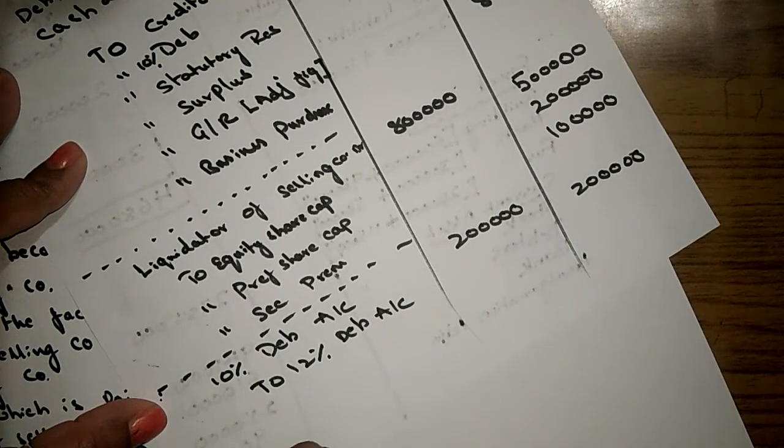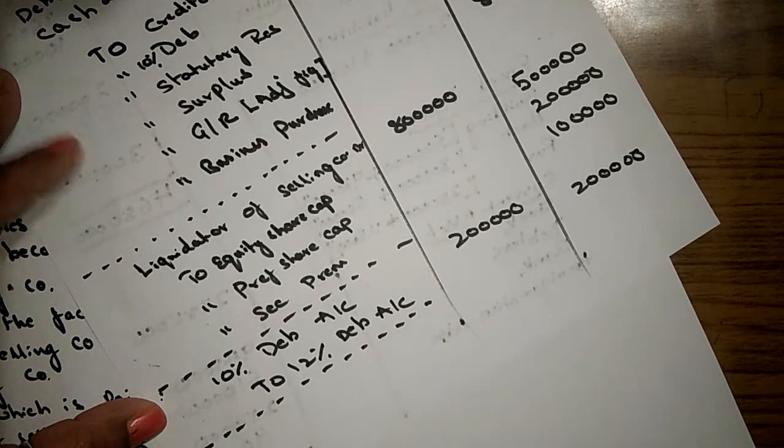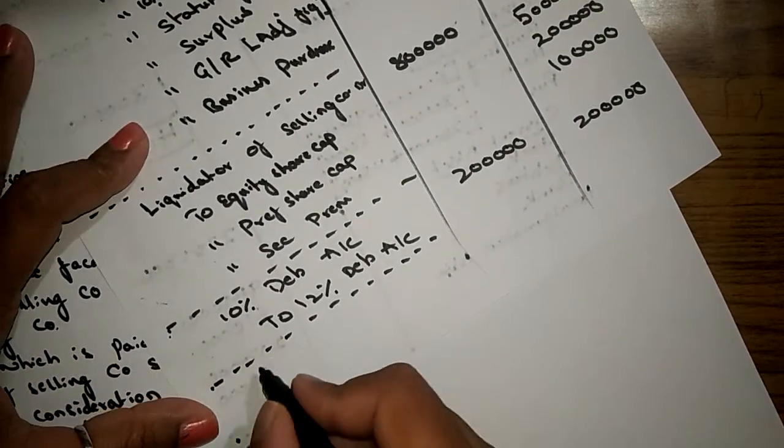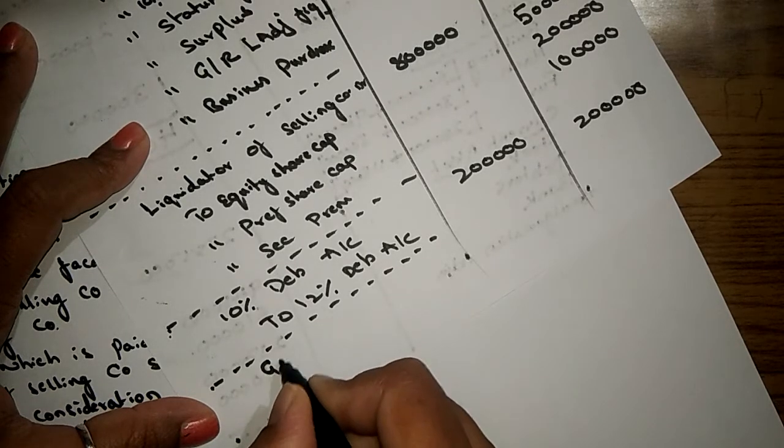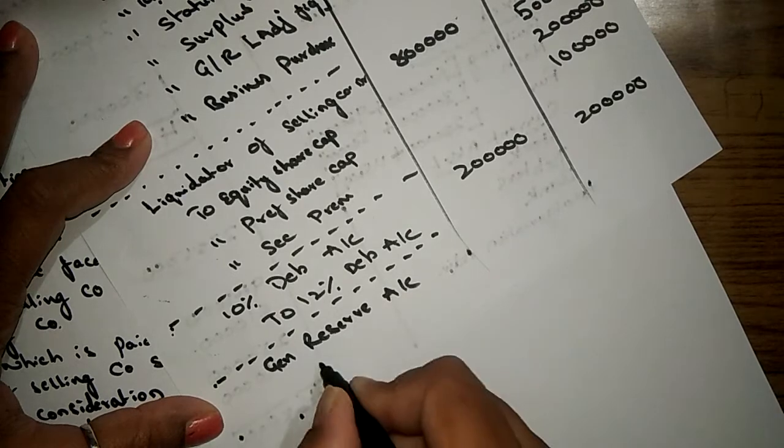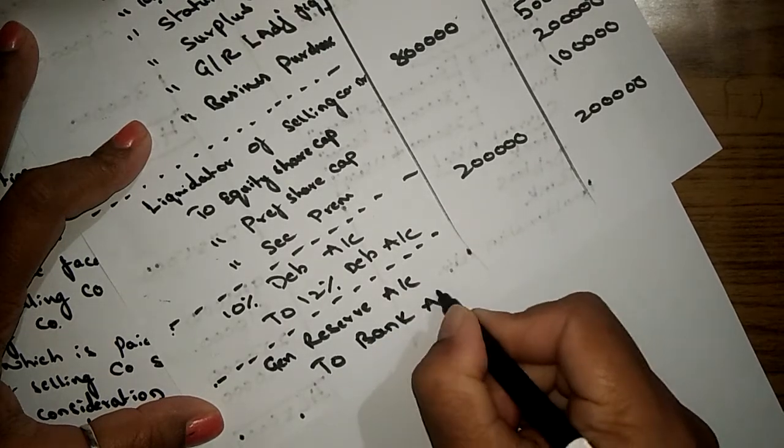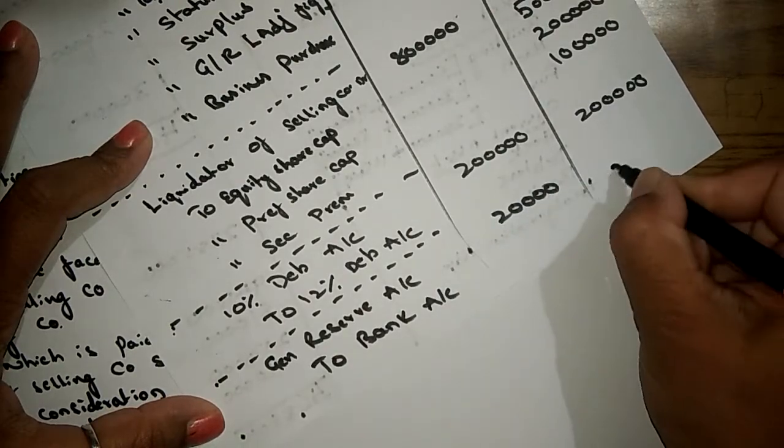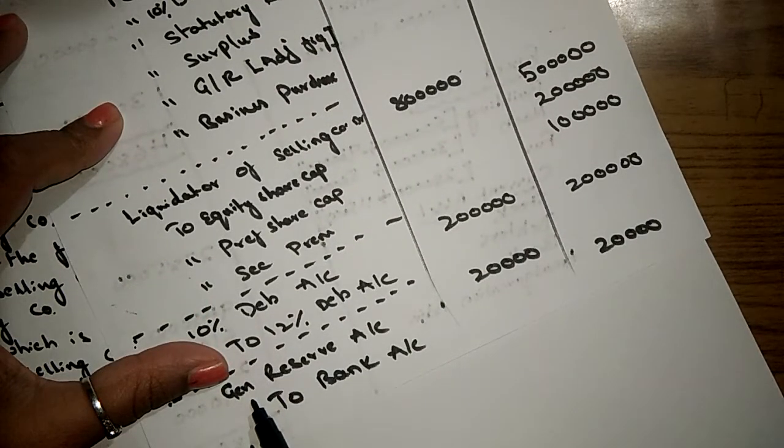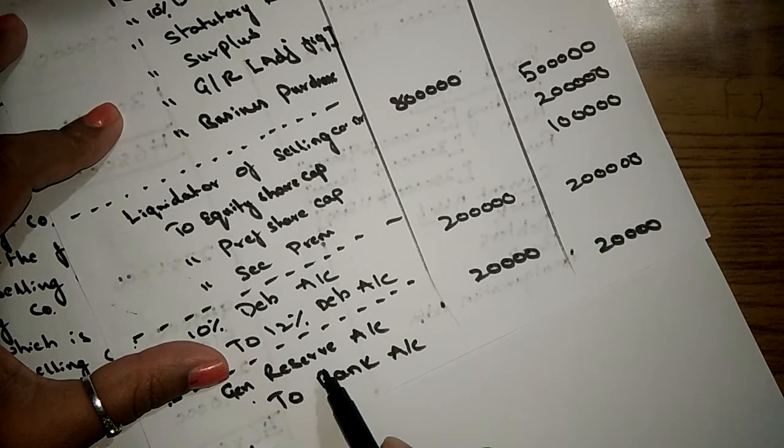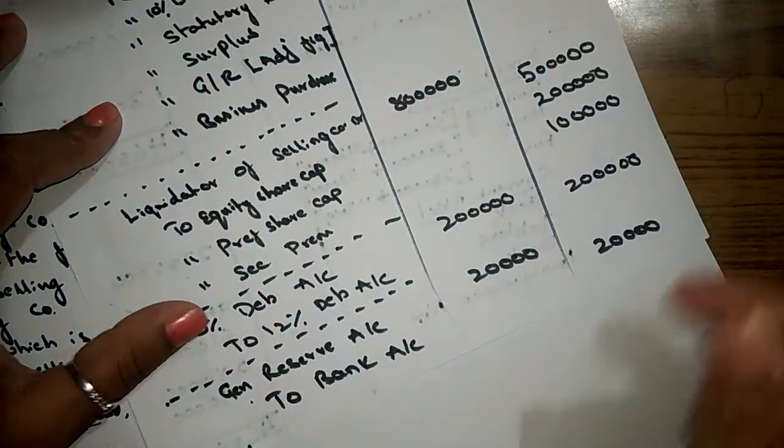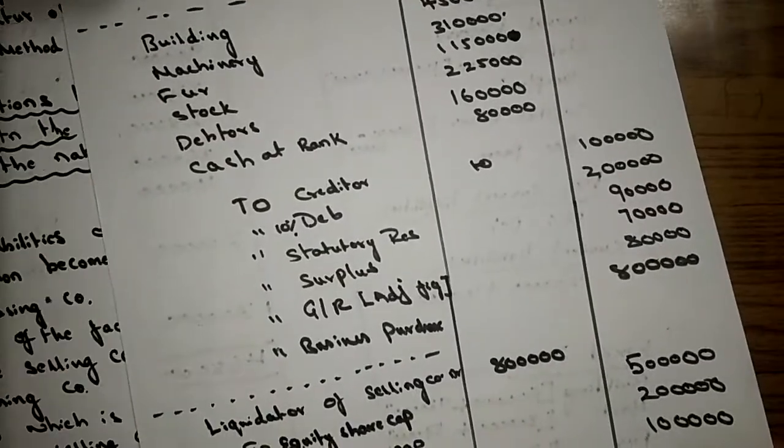The last entry would be payment of liquidation expenses. General reserve account to bank account 20,000. Under purchase method we adjusted the expenses in capital reserve; now here in this problem we are adjusting it into general reserve under pooling interest method. These are the journal entries.